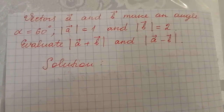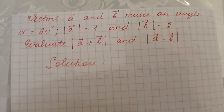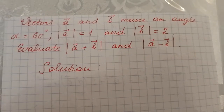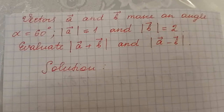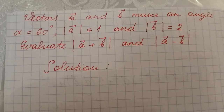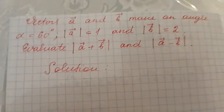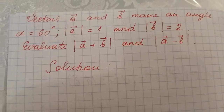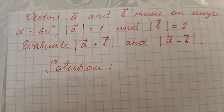This task is: vectors A and B make an angle alpha. This angle is equal to 60 degrees. The absolute value of vector A is equal to 1 and the absolute value of vector B is equal to 2. We have to find the absolute value of the sum of vectors A and B, and the absolute value of the difference of vectors A and B.